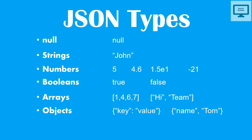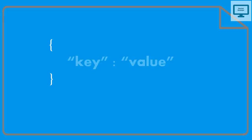JSON always starts with curly braces. It can have key-value pairs, where the key is a field name and the value contains the field data. We use a colon to differentiate between key and value. If we have more data, we use a comma. This is the simple format of JSON — it will always start with opening and closing curly braces.